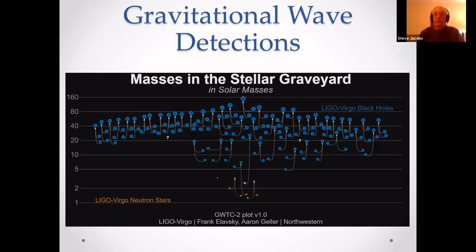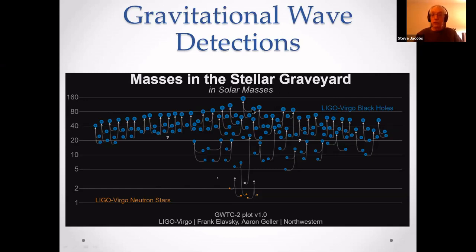Looking at the gravitational waves that both LIGO and Virgo have detected: in blue are the black hole mergers, and at the bottom are the neutron star mergers. For instance, one black hole slightly less than 80 solar masses and another slightly more than 80 solar masses merged into something a little less than 160 solar masses combined — it's ginormous.